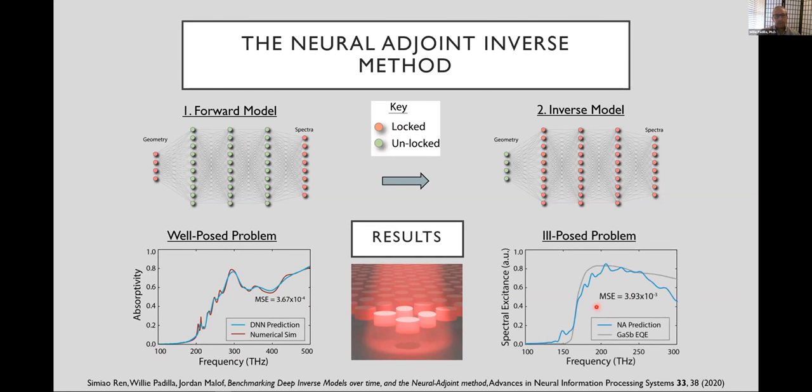But now what we want to do is to think about energy harvesting. We want to say, okay, we've just trained on some cylinders with various radii and heights. Now let's do something completely different, which is to look at the external quantum efficiency of gallium antimonide, which is the gray curve here. We have no idea if we can find a good result to this because this is just the external quantum efficiency from a semiconductor. Nonetheless, when we put that into our model, we can find this blue curve and find a decent match. We find about 4 times 10 to the minus 3, and so this is an ill-posed problem, and this neural adjoint method, which is based on deep learning, indeed is able to give us a good solution to that problem.